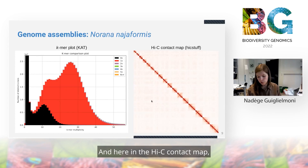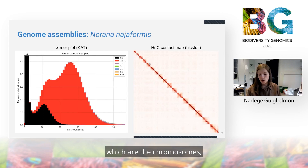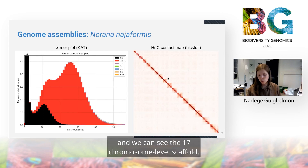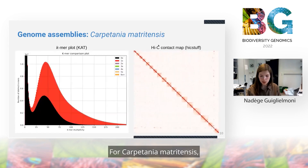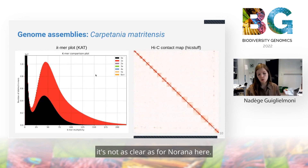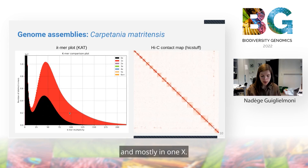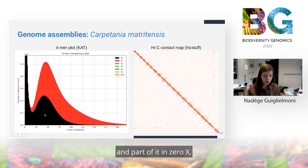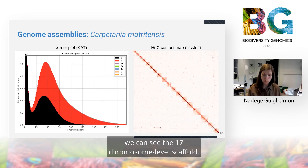In the Hi-C contact map, we can see squares of heightened interactions which are the chromosomes, and we can see the 17 chromosome-level scaffolds. For Carpetania metritensis, the plot is not as clear as for Norana. The homozygous peak is likely mostly at 1x, and for the heterozygous peak we have part of it at 1x and part at 0x — still what we'd expect. And in the Hi-C contact map we can again see the 17 chromosome-level scaffolds.